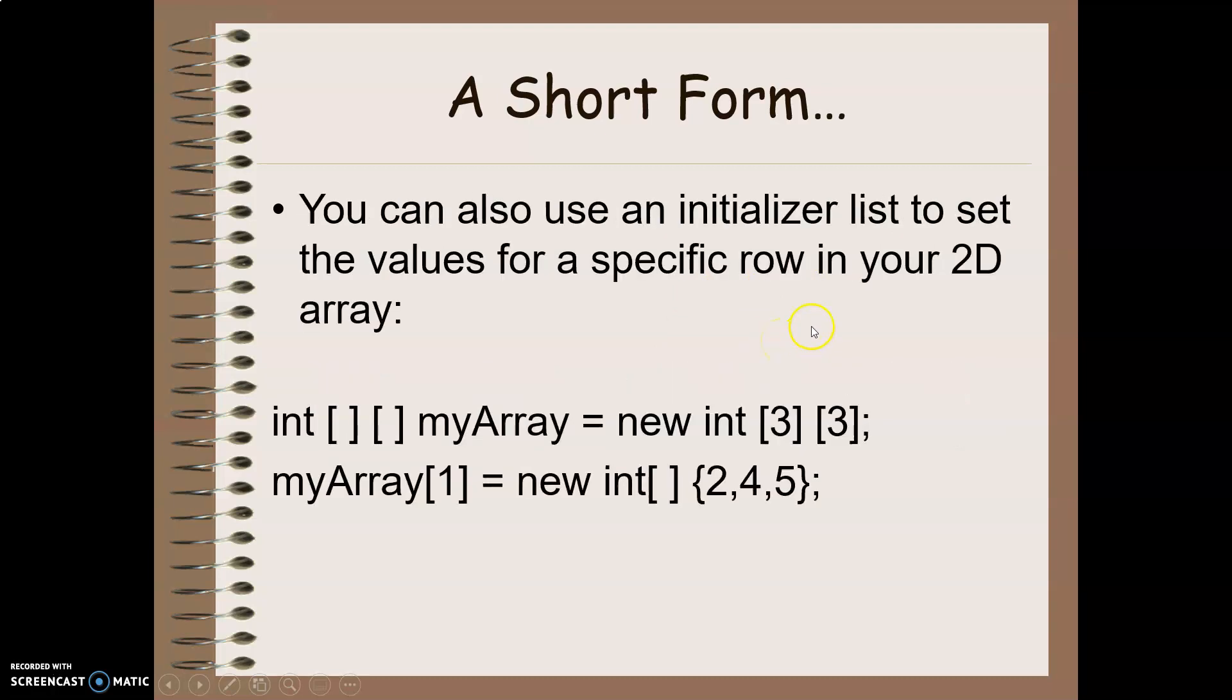If I want, I can use an initializer list to create a specific row, so just one row at a time if I want to do that. So here I've created an array, a two-dimensional array of three rows and three columns. And for only one of my particular rows, so in this case row one, I'm going to make it a new array and I provide an initializer list. So I can do it that way as well, doing them one row at a time.